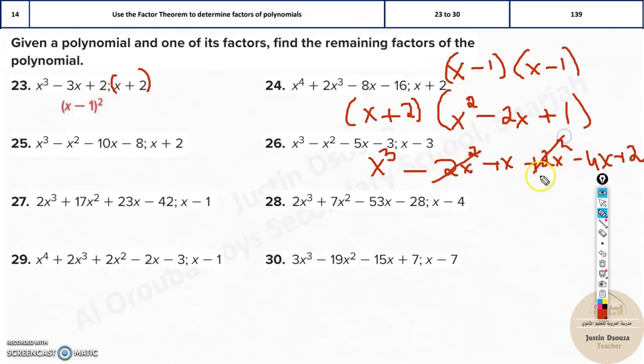Now here, minus 2x squared plus 2x squared cancels. You are remaining with x cubed. And then you have plus x and minus 4x. How much is it? Minus 3x. And lastly, you are remaining with plus 2. Now this must be the question. And it should be. If this is the question, yes, that's the correct answer. Otherwise, that is wrong.